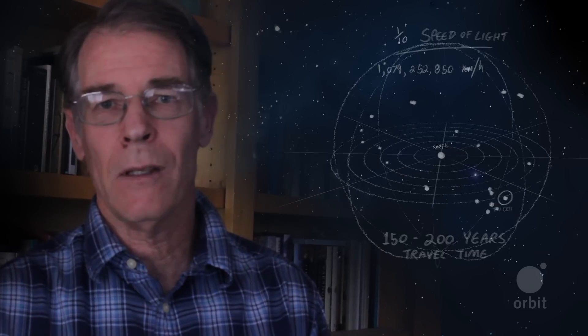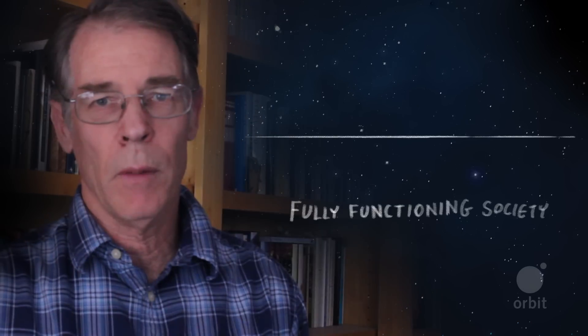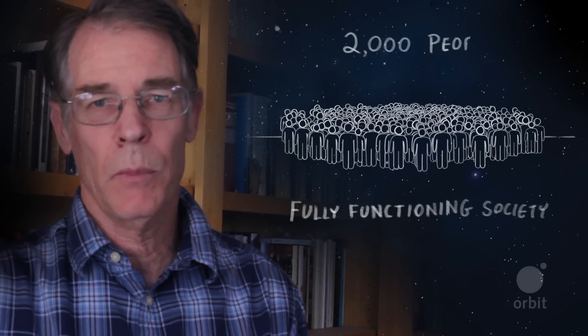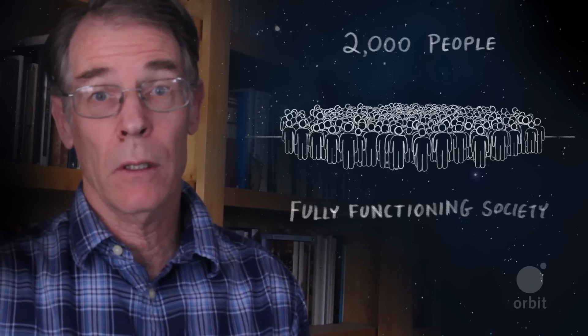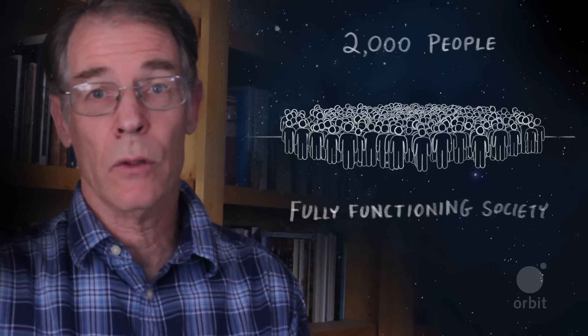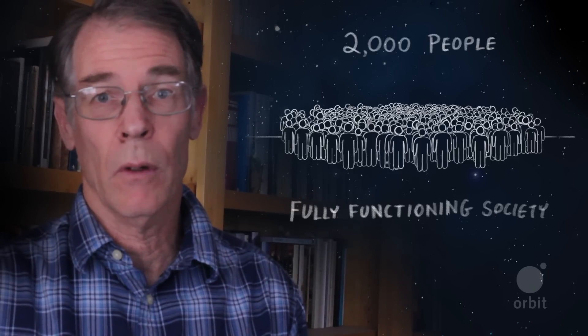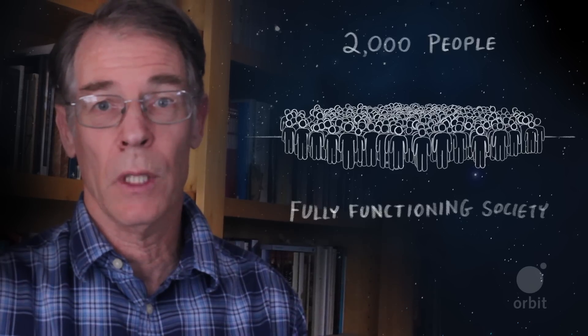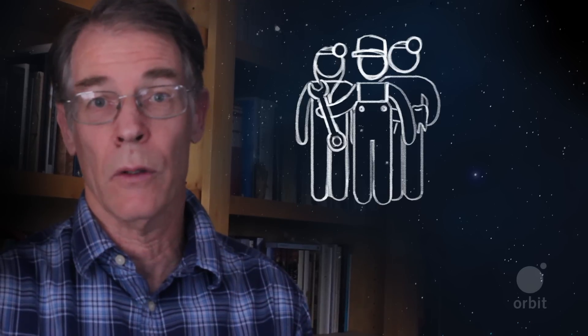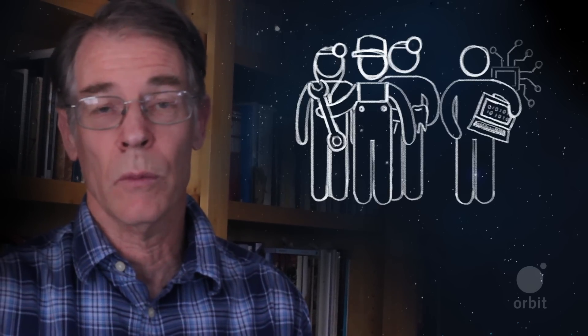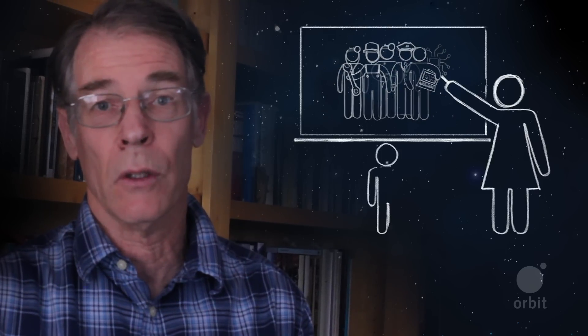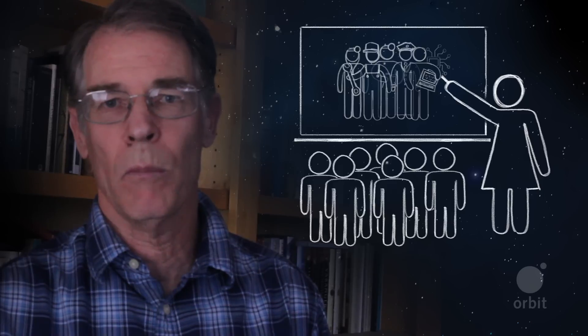To get there, you would have to send a fully functioning society that maybe could include say 2,000 people, but at that point, you begin to realize that every one of those 2,000 people is going to have to be a really accomplished and contributing member of society, and there's going to have to be doctors and dentists, and people who can repair the ship, and people who can understand the ship's computer systems, and so on and so forth, and they're going to have to also be teachers, training the next generations to do what they've done, because it would be multi-generations.